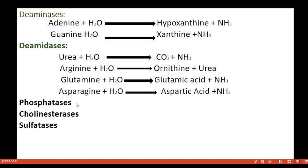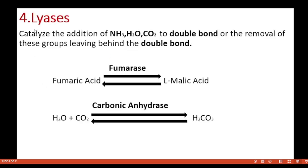Other examples of hydrolases are phosphatases, polyesterases, and sulfatases. The fourth class is lyases. These enzymes catalyze the addition of ammonia, water, or carbon dioxide to a double bond, or the removal of these groups leaving behind a double bond. For example, fumarase acts on fumaric acid and reversibly converts it to L-malic acid. Carbonic anhydrase, an enzyme present in red blood cells, converts water plus CO₂ to carbonic acid, H₂CO₃.